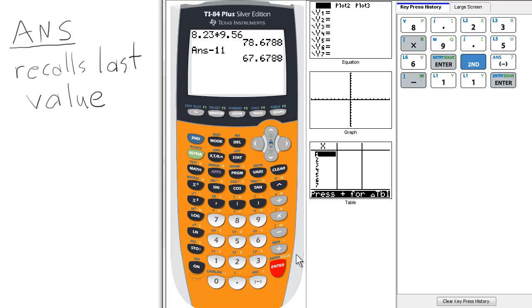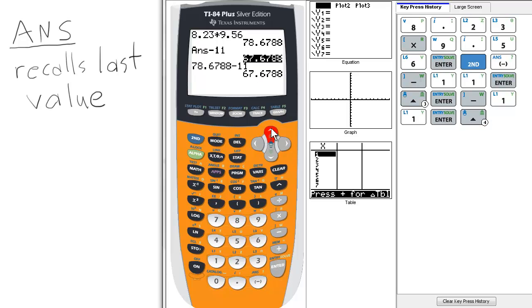Now if you happen to have a TI operating system 2.55 or higher, you can actually just scroll up to use that value again and again. And what's convenient about this is you can use any value you've actually calculated in your recent memory.